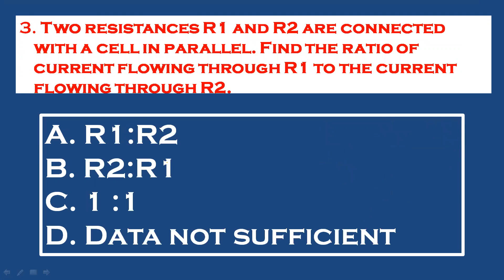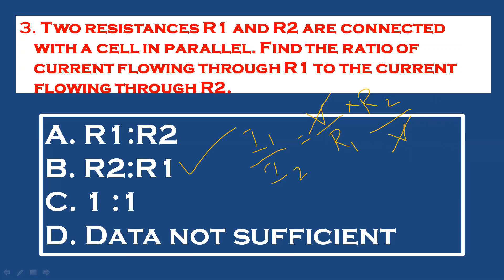Question 3: Two resistances R1 and R2 are connected with a cell in parallel. In parallel combination, the potential difference will be the same but current is different. Find the ratio of current flowing through R1 to the current flowing through R2. I1/I2 = R2/R1. Option B is the correct answer.